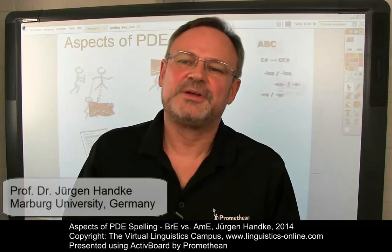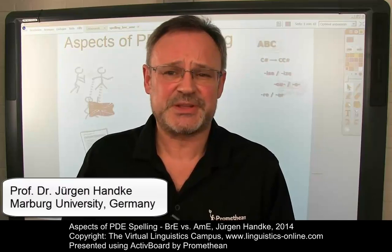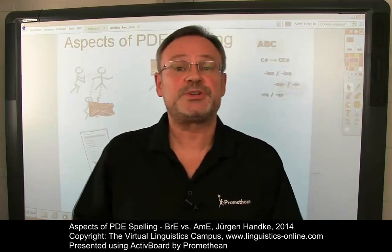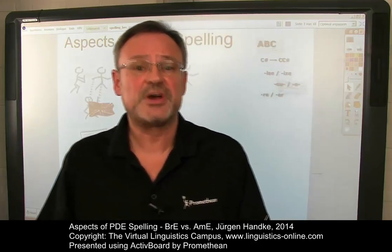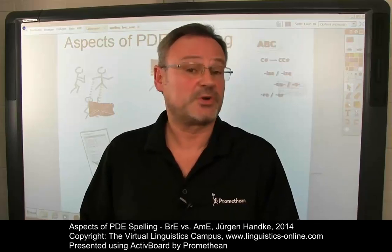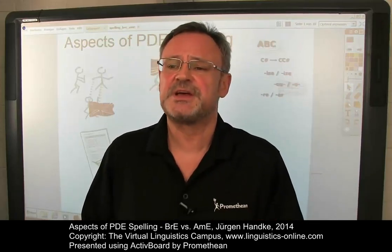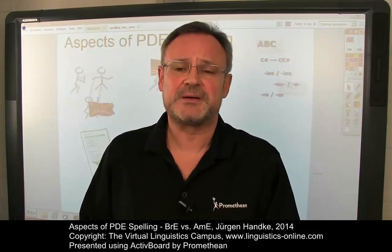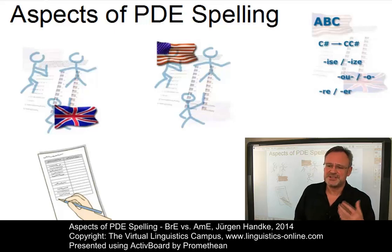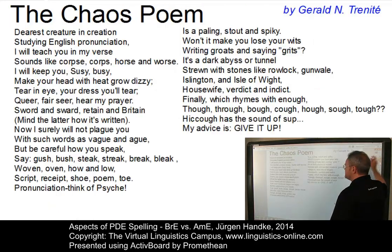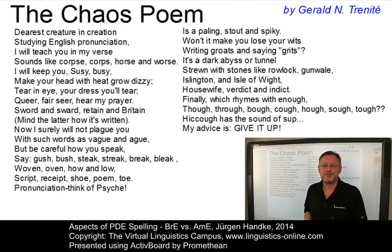Hello again and welcome to another short e-lecture about some selected aspects of present-day English spelling. The English language has an alphabetic writing system with which letters correspond to speech sounds and vice versa. However, it is far from being an ideal fit because simple one-to-one correspondences between graphemes and phonemes, as in the word 'man', are relatively few in number. To get an idea about this lack of correspondence, let us listen to an excerpt of a poem meant to illustrate the chaos of English orthography.